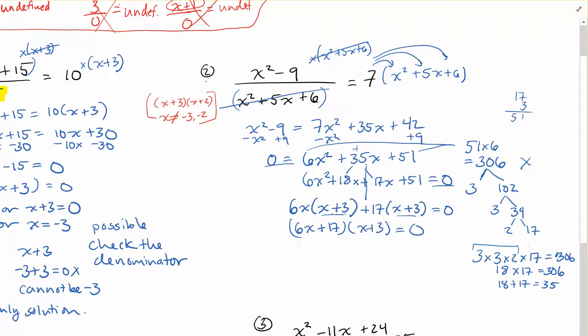Okay. Next step then would be solving for each of these. So I'm going to set both of them to 0. 6x + 17 = 0, or x + 3 = 0. Minus by 17 on both sides. 6x = -17. Divide by 6 on both sides. x = -17/6. Or x = -3.